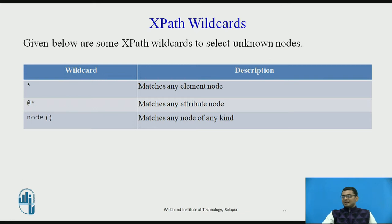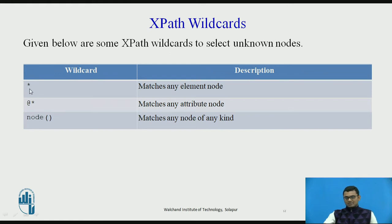So what are wildcards? If you want to select some unknown nodes using an XPath expression, we can use wildcard symbols. A single asterisk matches any element node. An asterisk preceded with an at-sign (@*) matches any attribute node. And node() with parentheses matches any node of any kind. These are the three wildcards most popularly used in XPath.